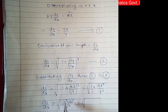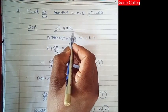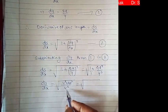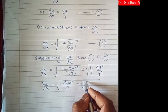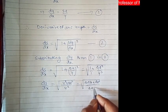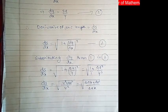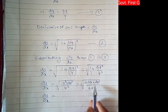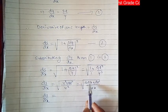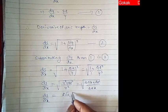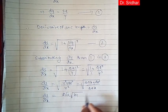Now this y², from the original equation y² = 4ax. Substituting this value, where y² = 4ax, we obtain √((4ax + 4a²)/y²), where y² = 4ax. So on simplifying, ds/dx = √((4ax + 4a²)/4ax).